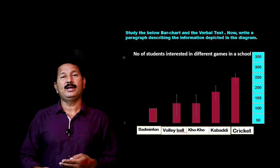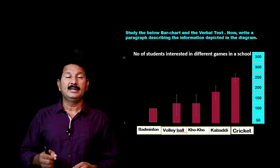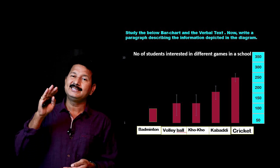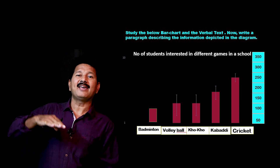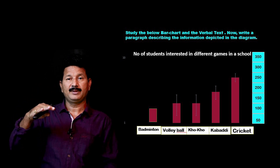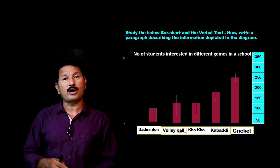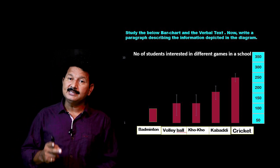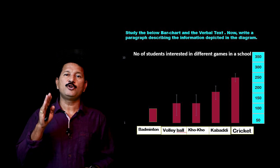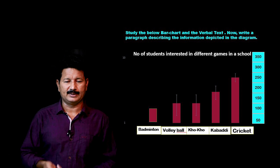Whenever you work with a pie chart or bar diagram, the first thing you must address is: what is it about, what is the highest or majority preference, and what is the least preferred. In the meanwhile you can talk about the other things, but these three areas should always be kept in mind while doing information transfer.